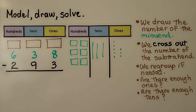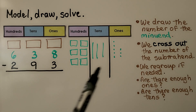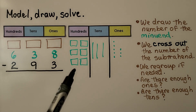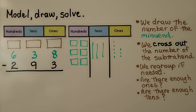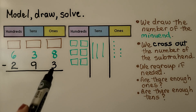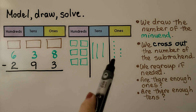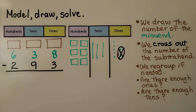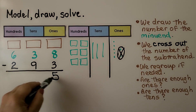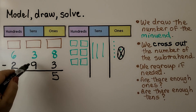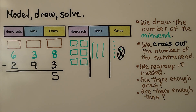Now we model, draw, and solve: 638 minus 293. We draw the minuend — six hundreds, three tens, eight ones — and we cross out the number of the subtrahend. We need to cross out three ones; there are eight there, so we cross three of them out, which leaves five ones. We have three tens and we need to take nine of them away, but we can't because we don't have enough tens.